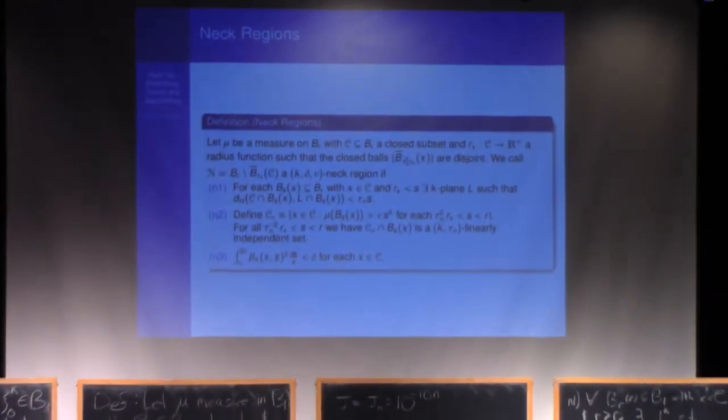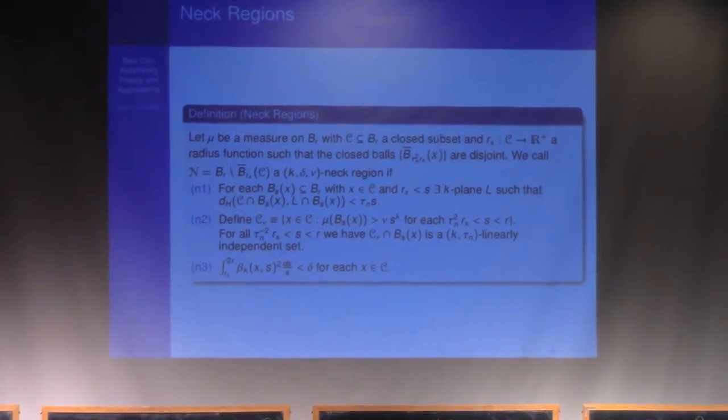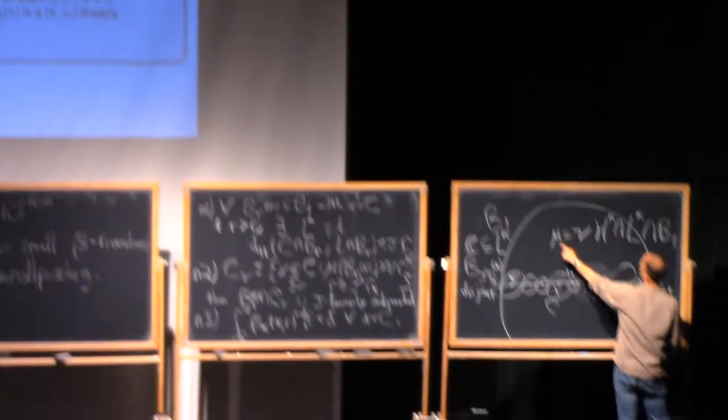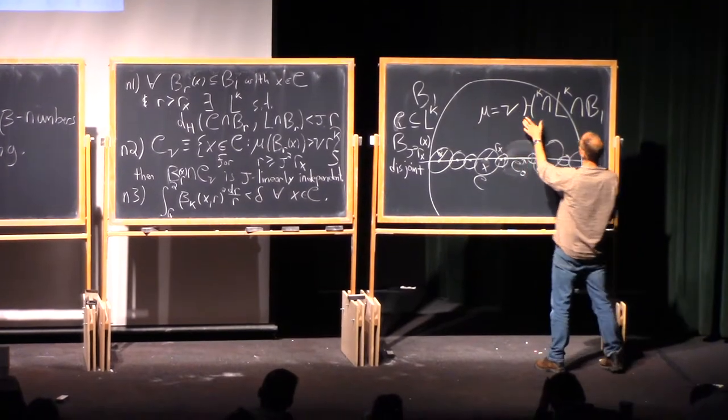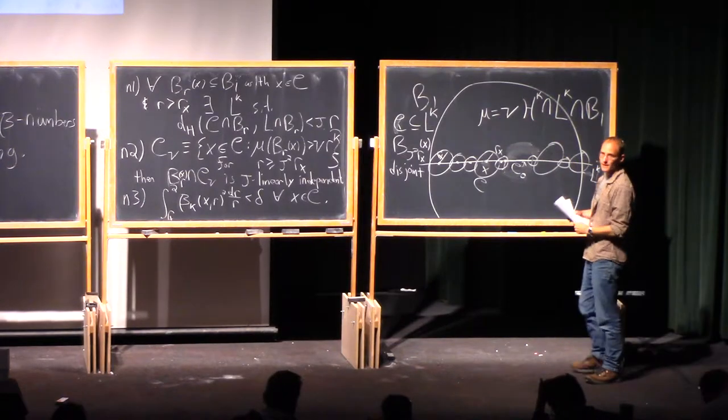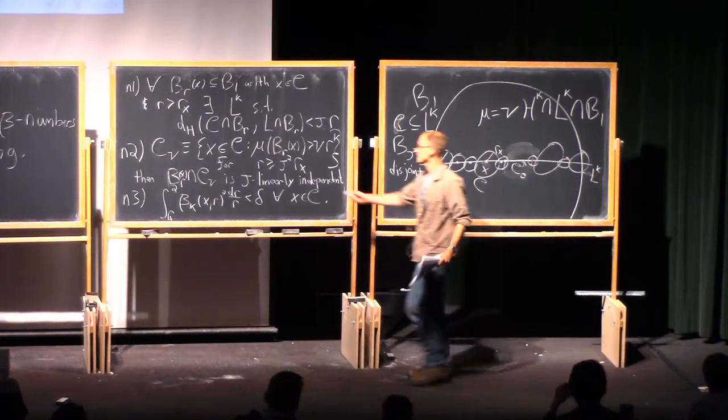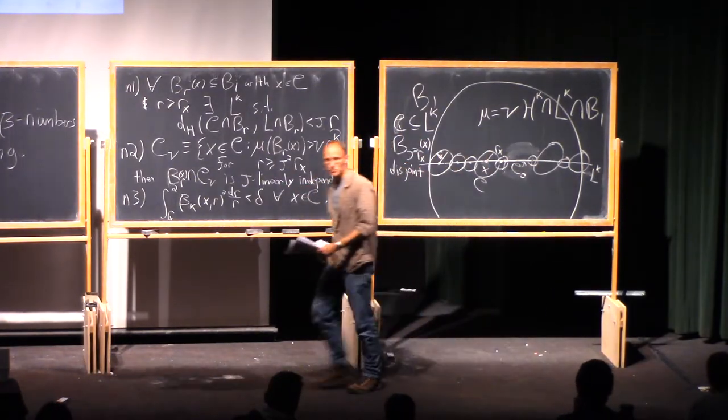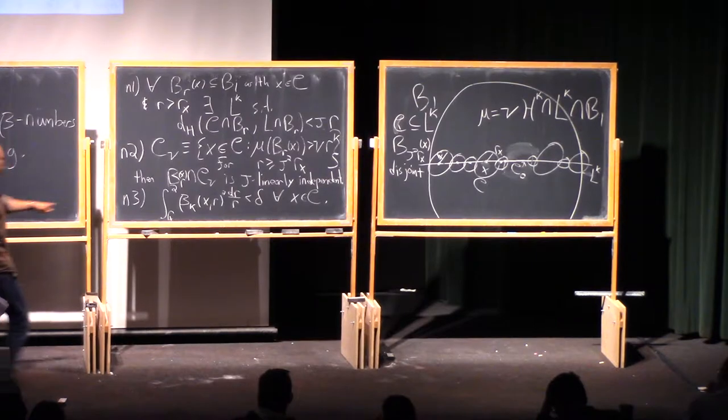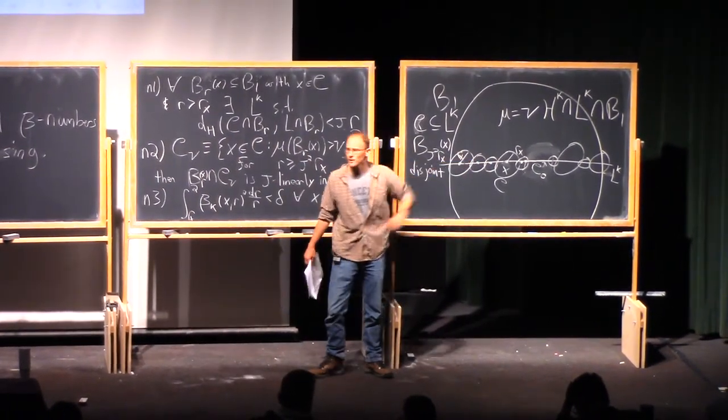Condition N3. We also insist for every single one of these center points that if we integrate from r sub x to 2 of our beta number, then this is less than delta. So remember, in the end, we'll be dealing with some sort of integral condition on the integral of this, which may just be bounded. But by assumption, if I'm on a ball like this, it's actually small, at least down to that scale.